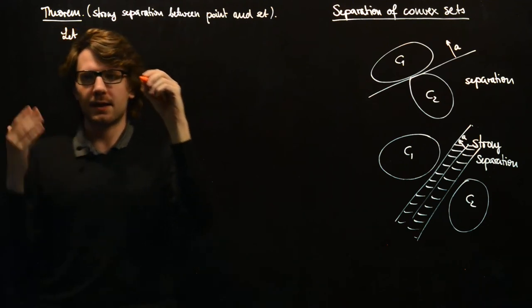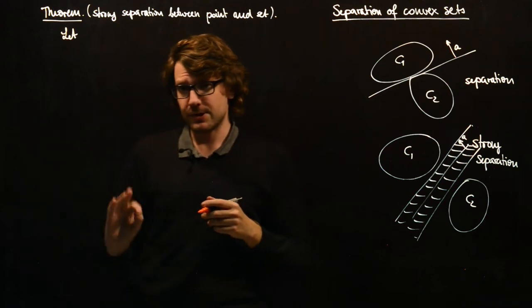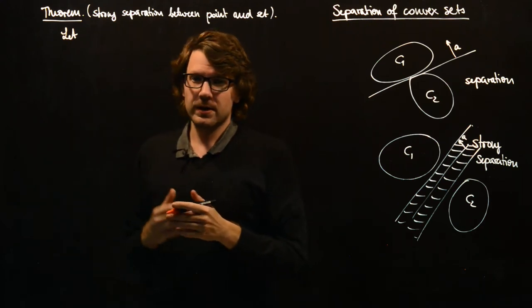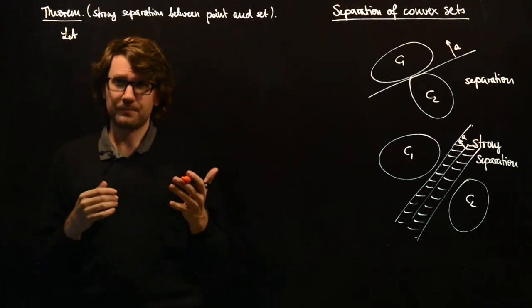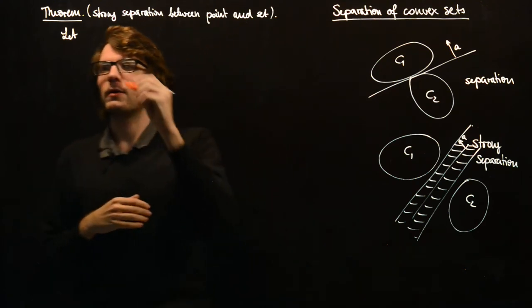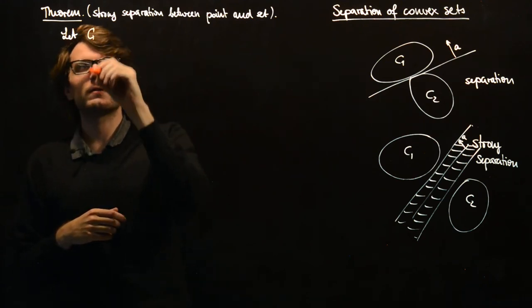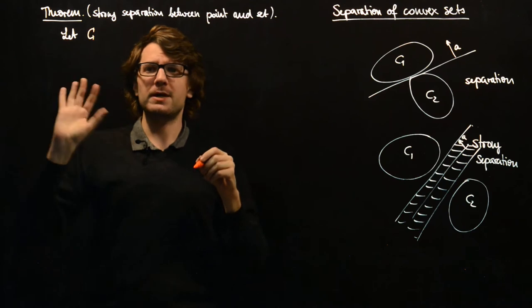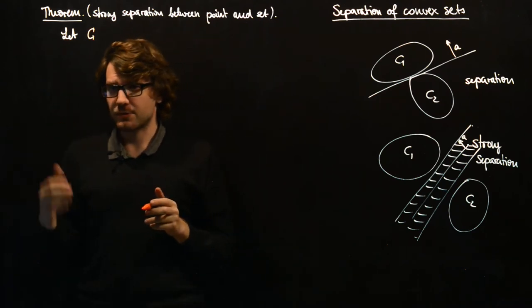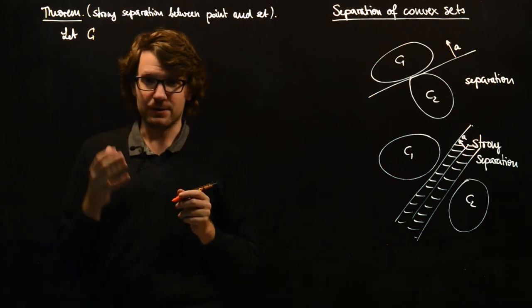So let H be our finite dimensional inner product space. We are using our projection lemma so that we will need finite dimension in order for the proof to work. In general, these separation theorems hold for much more general settings, but you cannot prove them the way we are doing this.